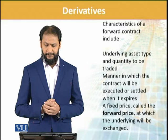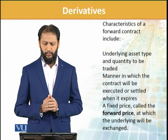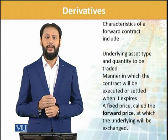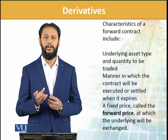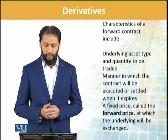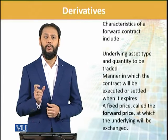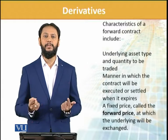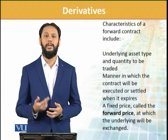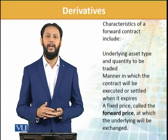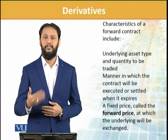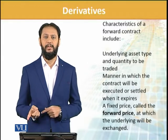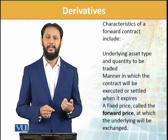Characteristics of a forward contract: underlying asset type and quantity to be traded, manner in which contract will be executed or settled when it expires — کہ کس quantity کی بات ہو رہی ہے اور کب یہ contract mature ہوگا۔ A fixed price — called the forward price — at which the underlying will be exchanged۔ ان کا آپس میں جو transaction ہوگی future date میں، وہ اس rate پہ ہوگی جو آج طے کر رہے ہیں — چاہے تین مہینے بعد، نوے دن بعد، یا سال بعد۔